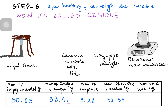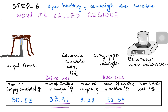Before heating the mass was 53.91 g and after heating it became 52.54 g. The water was within the sample before heating, so after heating we subtract: 53.91 − 52.54 = 1.37 grams. That is the mass of water lost.